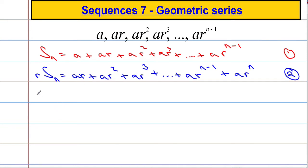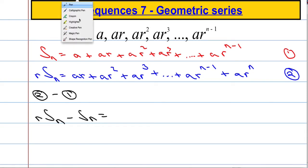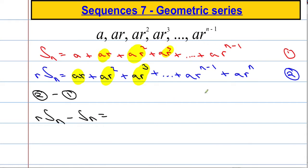Then what we're going to do is equation 2 take away equation 1. So I've got R times S of n, subtract S of n. These two terms here are going to cancel out, these two terms here will cancel out, these two terms here will cancel out, and so on and so forth. This term here is going to cancel out with this one, and we're going to be left with AR to the n and take away that A.